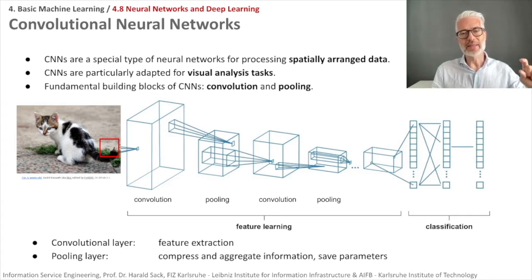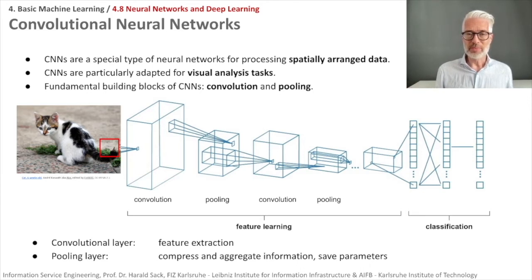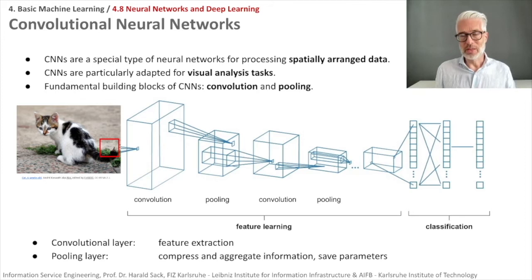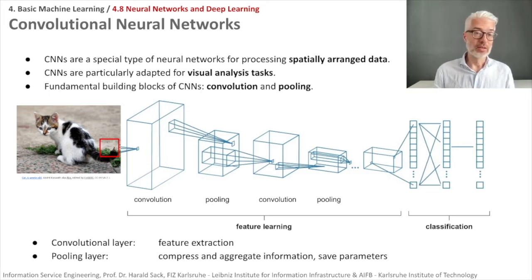These come before the classification layers, which are fully connected layers. When you do filtering and feature generation beforehand, the fully connected classification layer can become much smaller and the features are already optimized. When trained sufficiently, the processing pipeline before classification acts like the visual cortex in a brain — perfectly capturing features. You can then reuse this pipeline and simply adapt it to a new classification layer, training it for new classes or new types of images. This is called transfer learning. Convolutional layers do feature extraction; pooling layers compress and aggregate information, saving a lot of parameters.